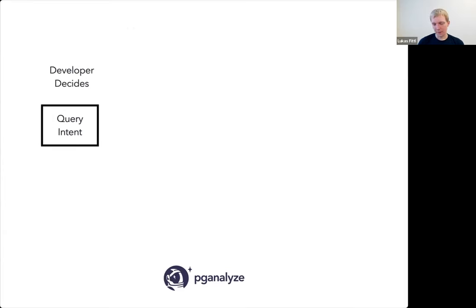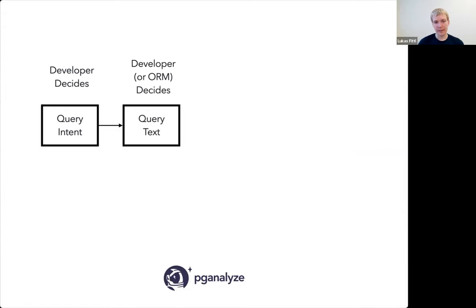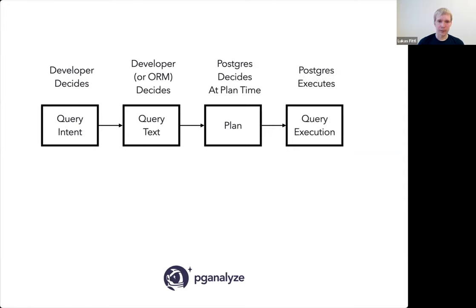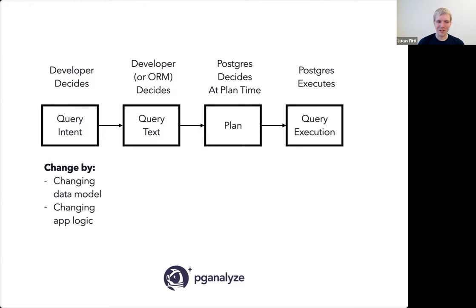I want to take a step back and think about where these queries come from and what we can change. Typically an application developer decides the query intent — what they're trying to get from the database. Then either the developer or an ORM decides the exact query text. From that text, Postgres decides at planning time which plan to use, and last, Postgres executes your query.